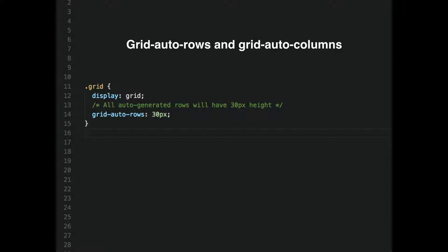GridAutoRows and GridAutoColumns specify the height and track size of auto-generated columns and rows. They can be in any unit, including FR units. The initial value is auto, which sets the height equal to the largest content item. And yes, you can use minmax with these as well.